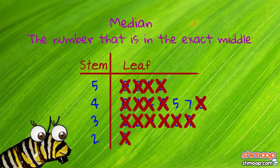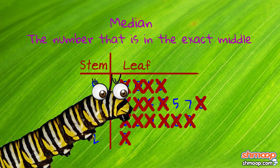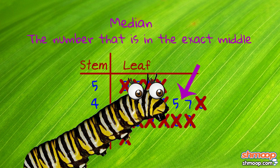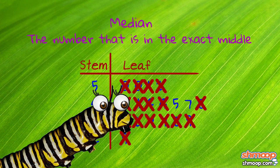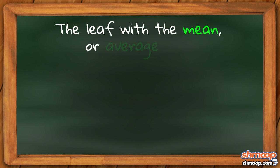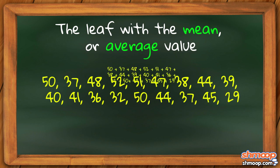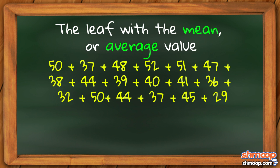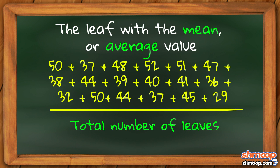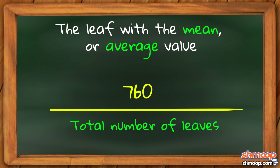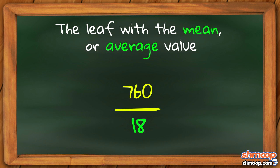Sadly, Cat has found that the median lands between 47 and 45. She doesn't have a leaf labeled 46. So she settles for the next best thing — the leaf with the mean, or average value. To find the average, we just add the values of all the leaves and divide by the total number of leaves. All of them added together equals 760, and when we divide that by the total number of leaves — 18 — it gives us roughly 42.2.